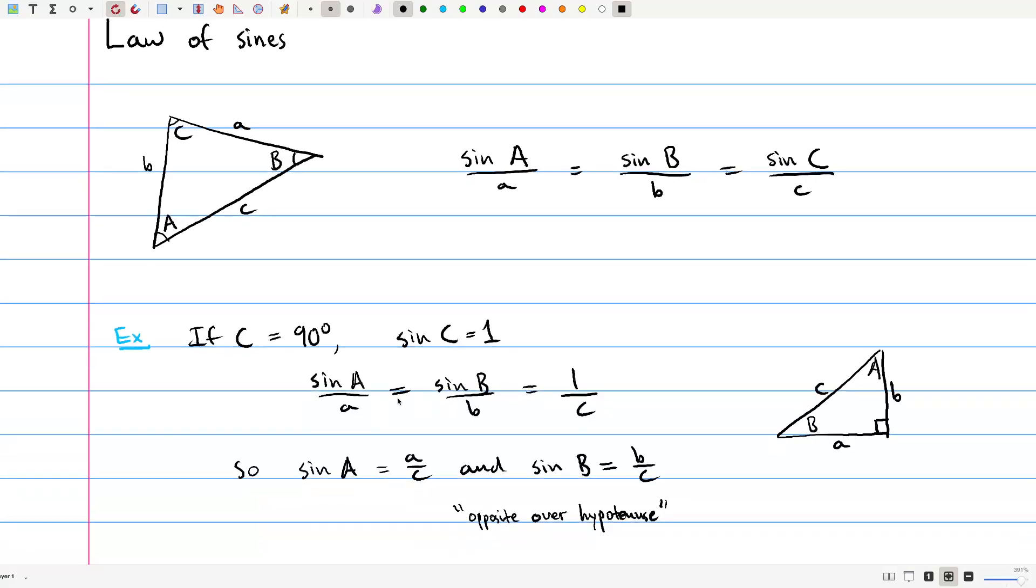So that, since all these are equal to each other, if we multiply, so we know sine of A over little a is 1 over little c. So if we multiply both sides by a, we get sine of big A is a over c. And similarly, if we take this equation multiply by little b, we get sine of big B is little b over c.